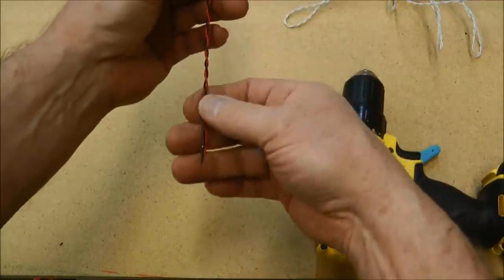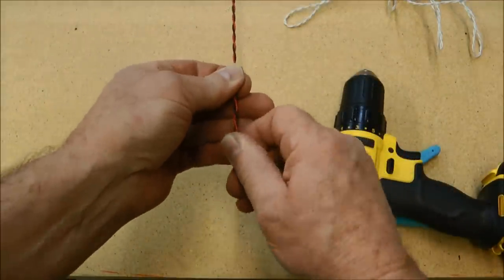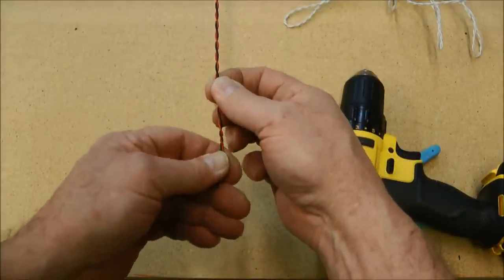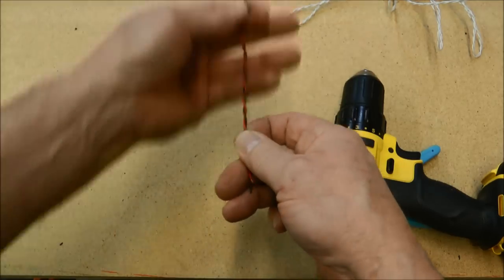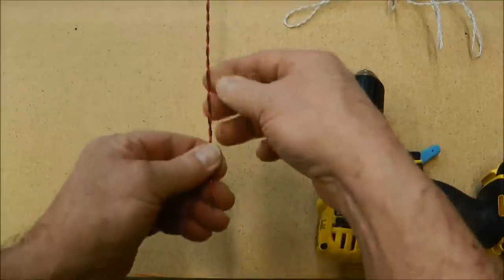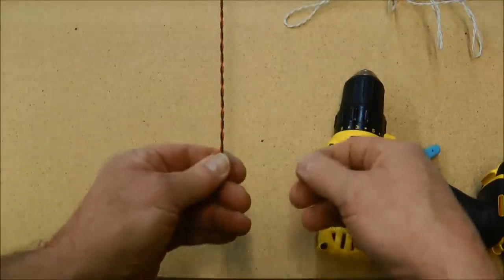There. Now we have a nicely twisted wire. We're running a little over two twists per inch here. I usually will pull it back a couple of times like this and get all the excess spring back out of that wire.